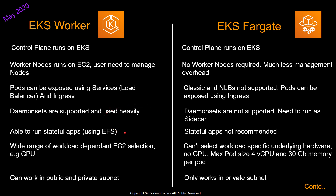For regular EKS worker, you can run stateful apps using EFS. Stateful apps are not recommended at this point for EKS Fargate as it doesn't support EFS natively. For regular EKS worker, you can choose different EC2 types for different workloads — for example, GPU instances for graphics-intensive workloads. For Fargate, you cannot select workload-specific underlying hardware and GPU is not supported. Each pod must specify its CPU and memory, with a maximum pod size of 4 vCPU and 30 GB of memory. Regular EKS workers can operate in public and private subnets, while EKS Fargate currently only works in private subnets.